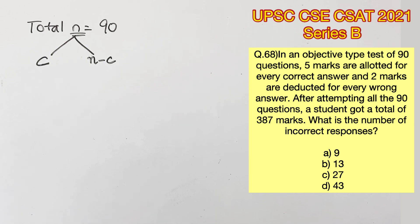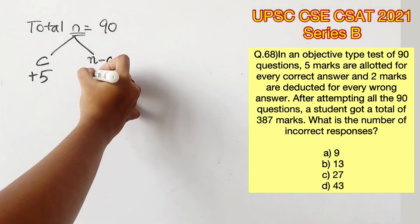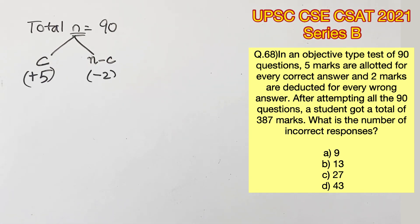Now they are saying that 5 marks are allotted for every correct answer and 2 marks are deducted for every wrong answer. So this student has got a total of 387 by attempting all the 90 questions.